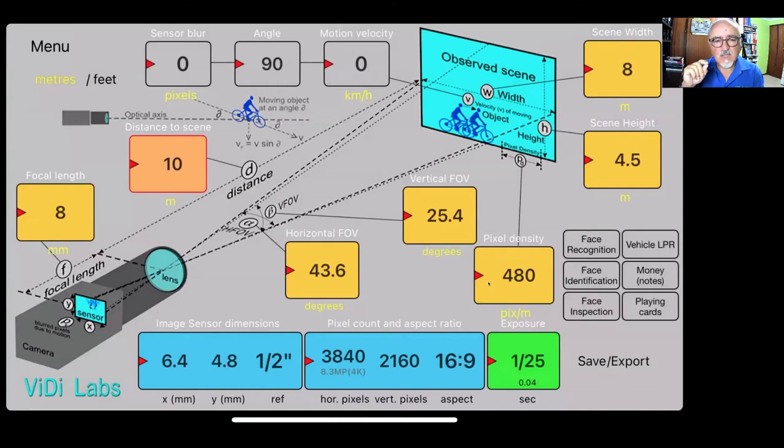Now, the actual top three gray windows on this screen, sensor blur, angle, motion, velocity that you see there, if you hold that for a second or more, that opens up. And now you've got the opportunity to calculate how many pixels blurriness you will produce by a moving object in front of the camera.